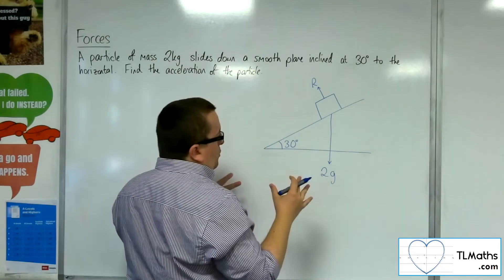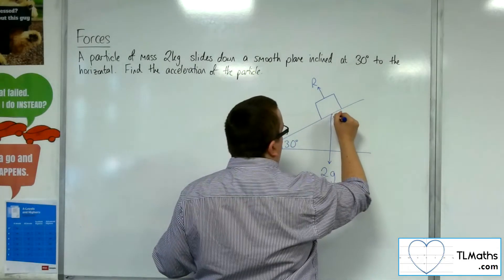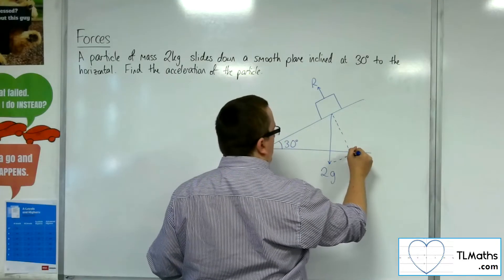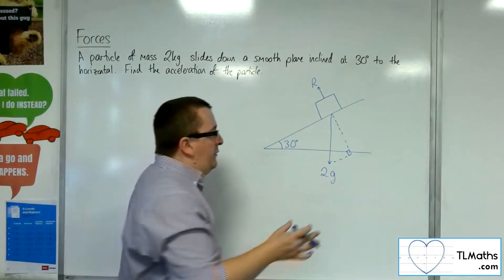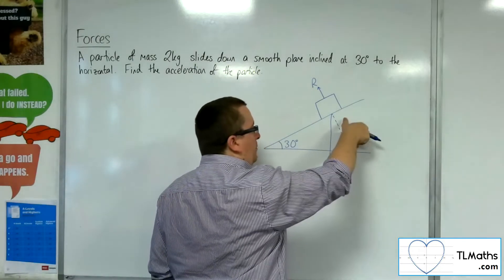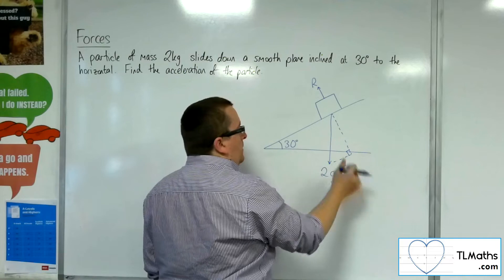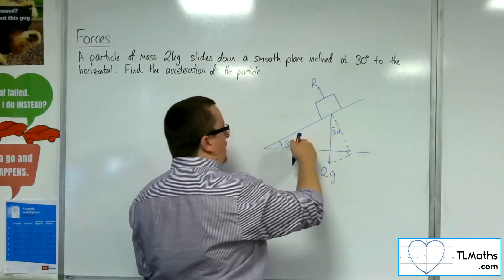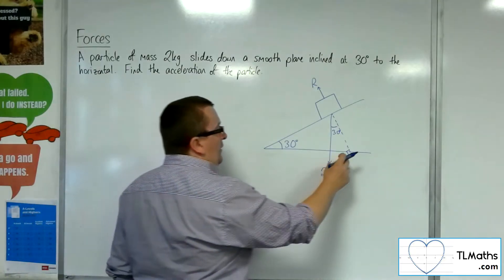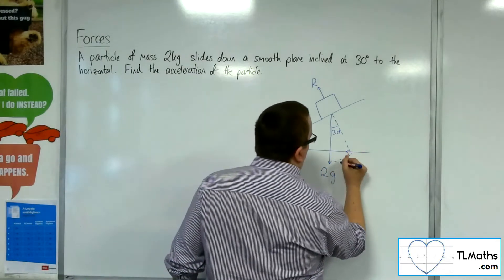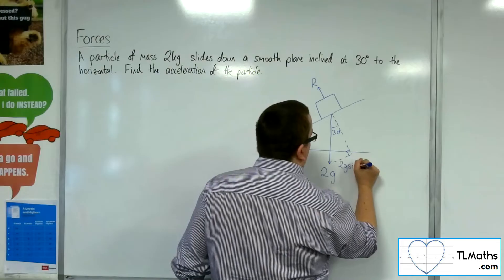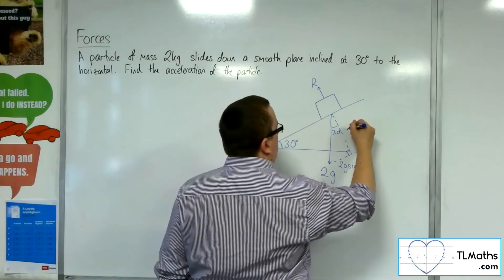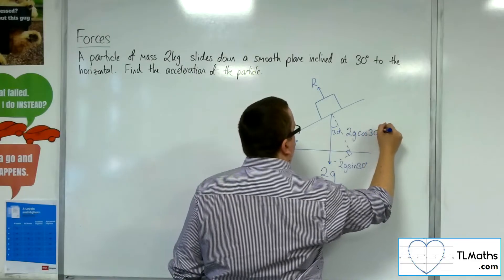And what we're going to want to do is we're going to break this weight force up into its two component parts. One that is parallel to the plane and one that is perpendicular to the plane. So this angle here is going to be the same angle as that one there. So the opposite side will be 2G sine 30 and the adjacent side will be 2G cosine 30.